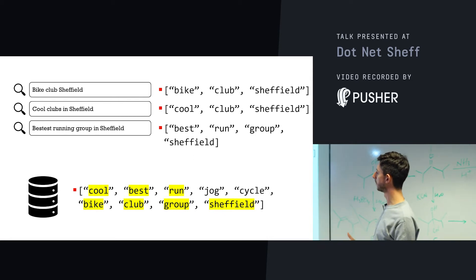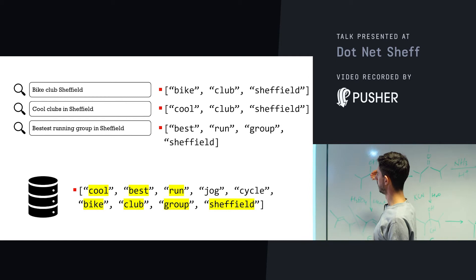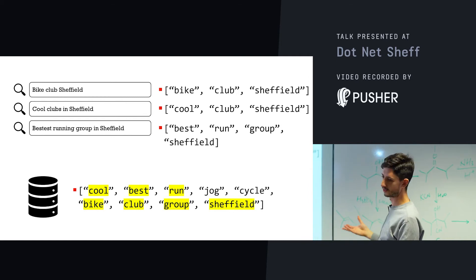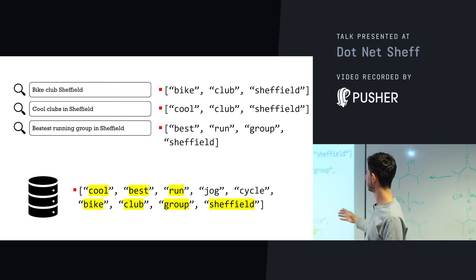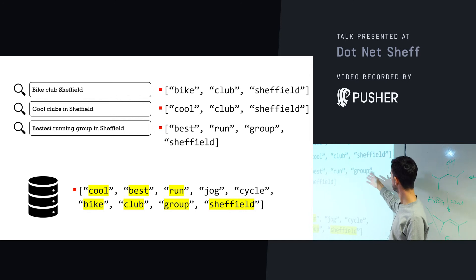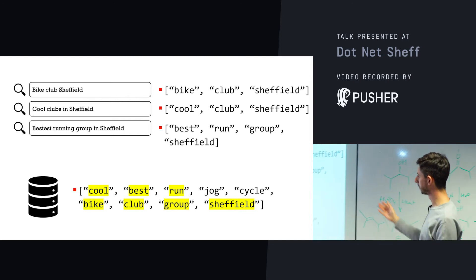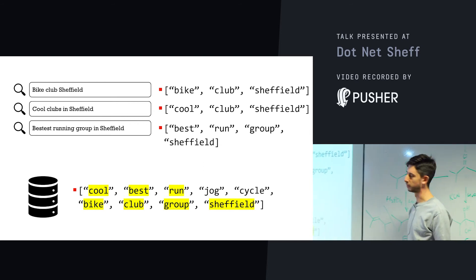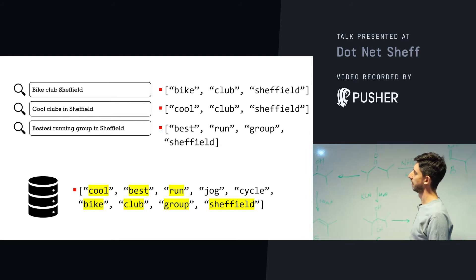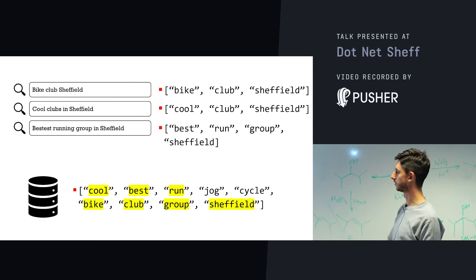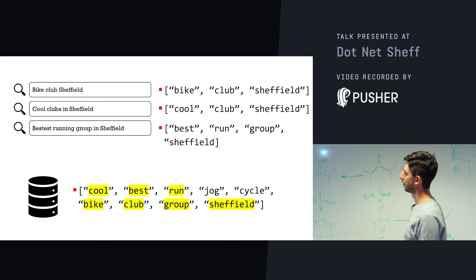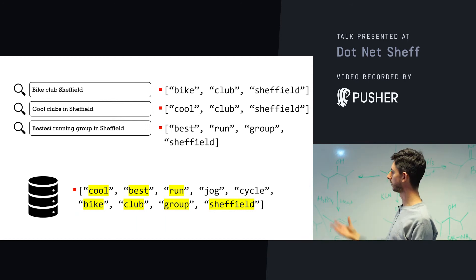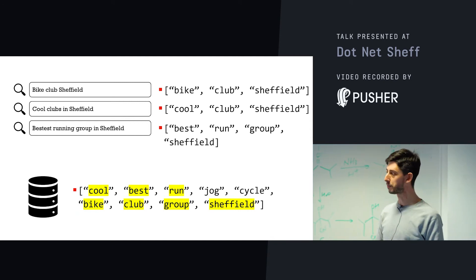These three different written queries, when run through the analysis process, all produce matching terms. For example, 'bestest running group in Sheffield' gets stemmed to 'best', 'running' becomes 'run', 'group', 'Sheffield' lowercased — and now we've got exact matches with what's saved in our index. It'll perform as well as a simple 'bike club Sheffield' query. By indexing documents with analyzers — just as Elasticsearch, Solr, and the rest do under the hood — we can power loads of differently worded queries. However you bash your search query in, you'll always get a result, and it'll happen really fast.